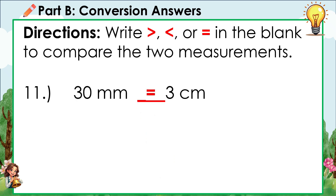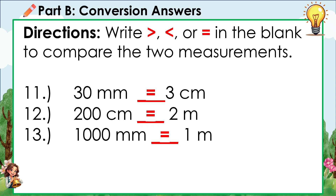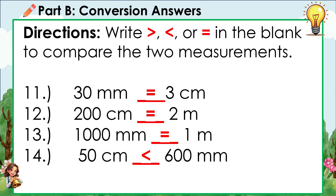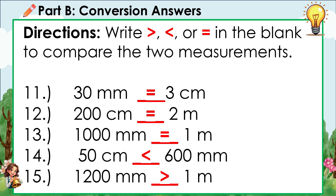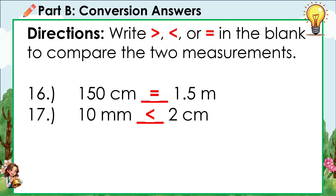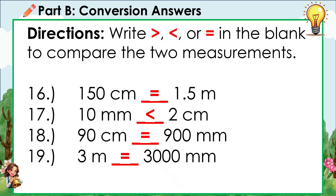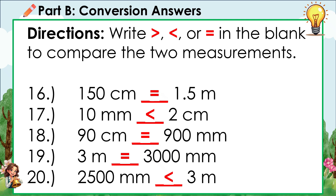11. 30 mm is equal to 3 cm. 12. 200 cm is equal to 2 m. 13. 1,000 mm is equal to 1 m. 14. 50 cm is less than 600 mm. 17. 10 mm is less than 2 cm. 18. 90 cm is equal to 900 mm. 19. 3 m is equal to 3,000 mm. 20. 2,500 mm is equal to 2.5 m.